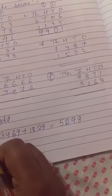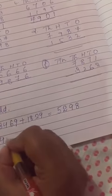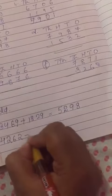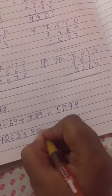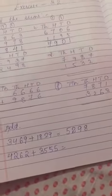Now question number B. 4, 2, 6, 2 plus 3, 5, 5, 5 is equals 2. Thank you.